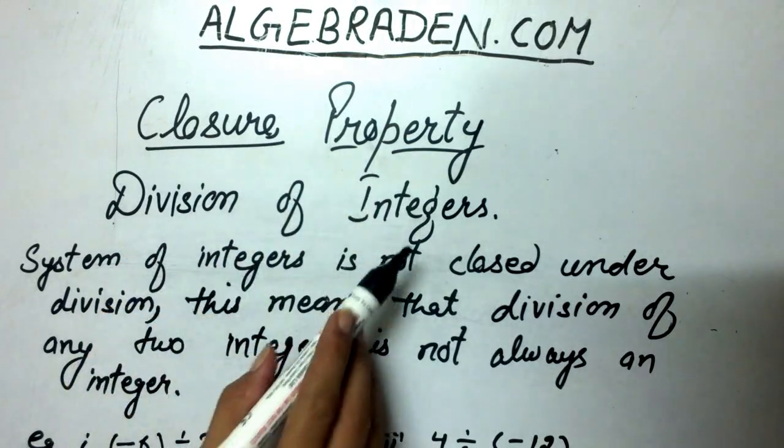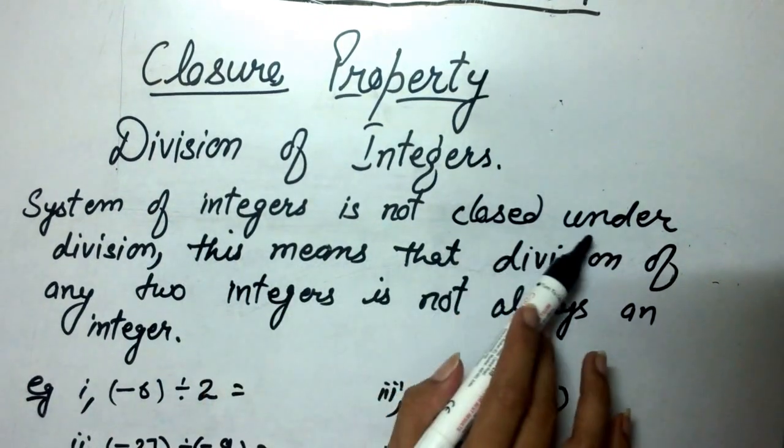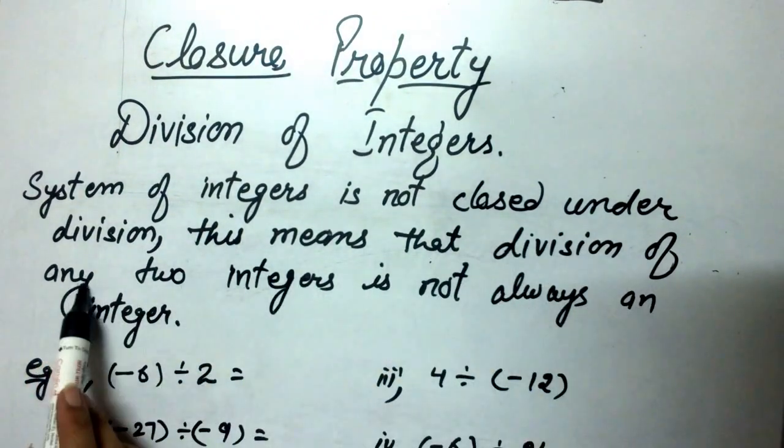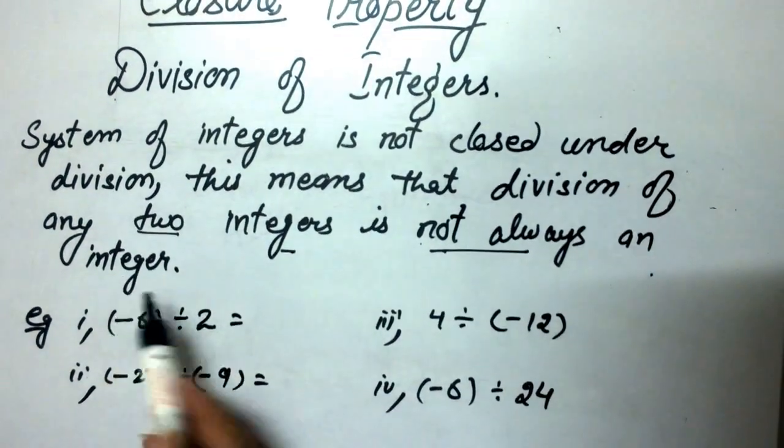Closure property, division of integers. System of integers is not closed under division. This means that division of any two integers is not always an integer.